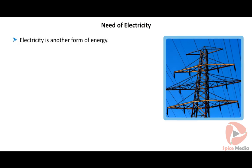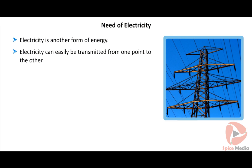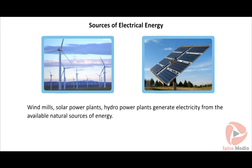Electricity is another form of energy. It is easily transmitted from one point to the other than other forms of energy. Electrical energy is produced from available natural sources of energy. Windmills, solar power plants, and hydropower plants generate electricity from available natural sources. Windmills utilize energy from blowing wind and convert mechanical energy to electrical energy.